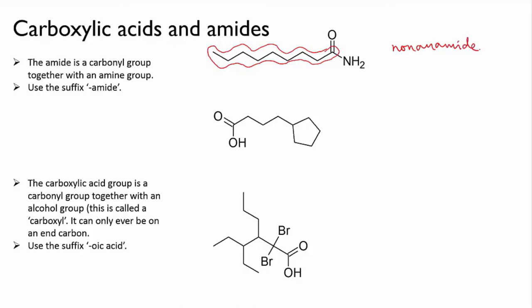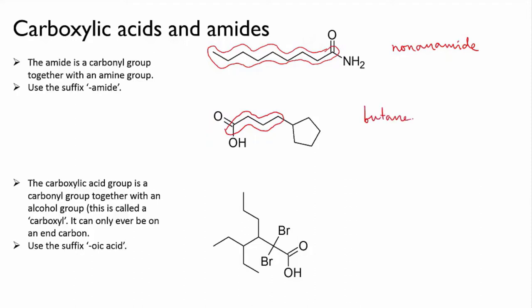The next molecule is a carboxylic acid. This one looks a bit tricky, but we can break it down by remembering our naming rules. We have to find the longest chain that has the functional group in it. Here, the functional group is the carboxylic acid, and the chain that includes it is this straight chain section, which has four carbons — butane. So with the carboxylic acid group, that's going to become butanoic acid. And because a carboxylic acid has to be on an end carbon, we don't need to specify that it is on carbon number one — that's just assumed.